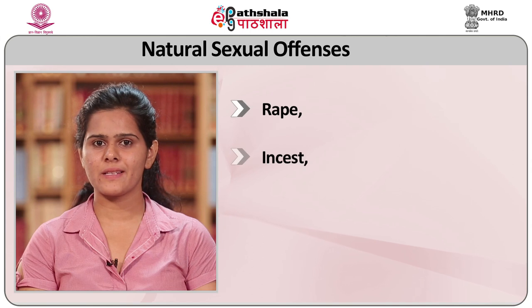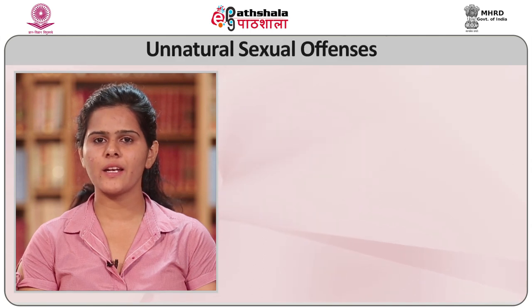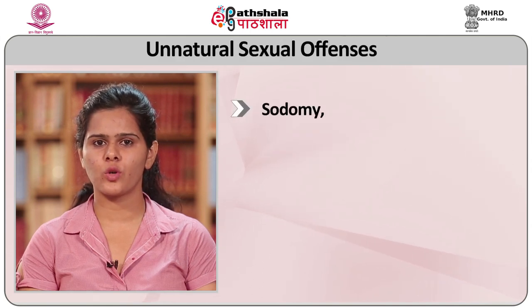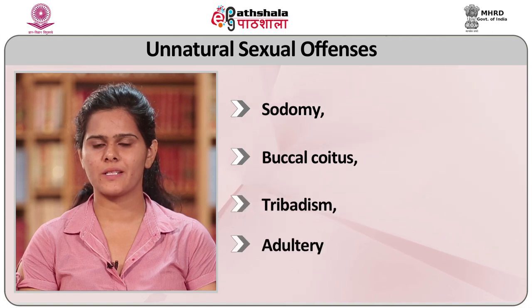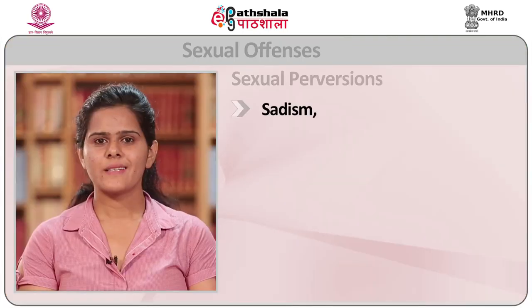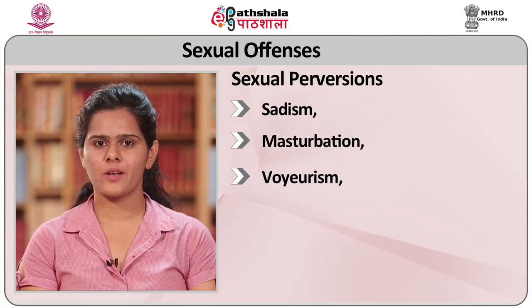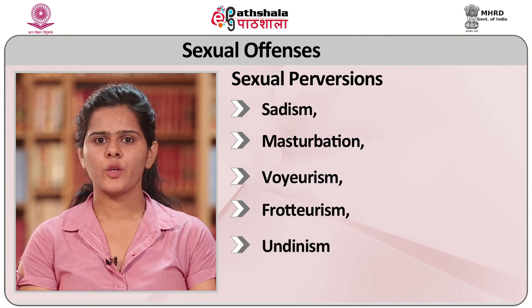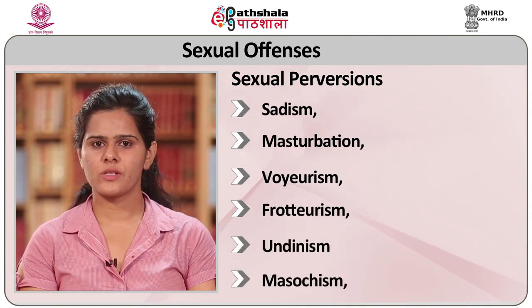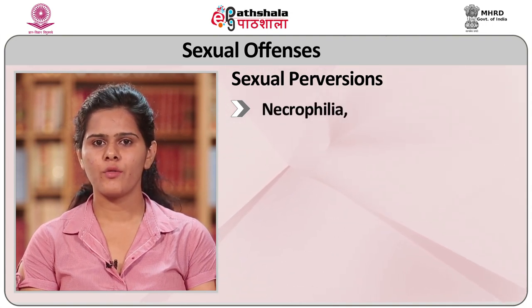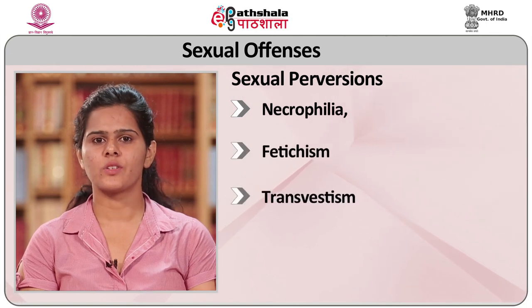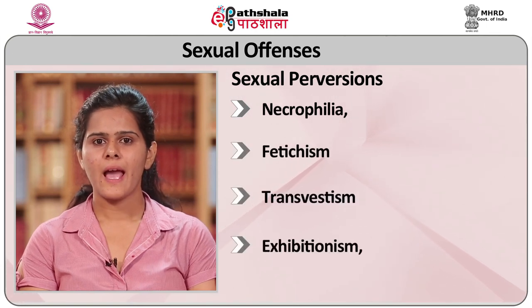Natural sexual offences include rape, incest, and adultery. Unnatural sexual offences include sodomy, buccal coitus, tribadism, and bestiality. Other sexual offences include sadism, masturbation, voyeurism, frotteurism, urophilia, masochism, necrophilia, fetishism, transvestism, and exhibitionism.